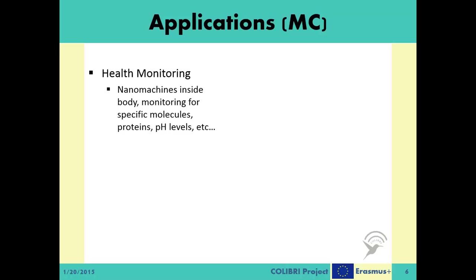Arguably, the most important application for MC systems is healthcare and health monitoring. Nanomachines deployed inside the human body can sense environmental values like the concentration of a specific chemical or physical properties like heat or pH level. Each device will then decide whether to report this data to a higher-level nano-machine in the topology based on the sensed value. If it decides to do so, the sensor nano-machine communicates with these higher-level nano-machines via MC systems — working essentially like another type of nano-sensor network.